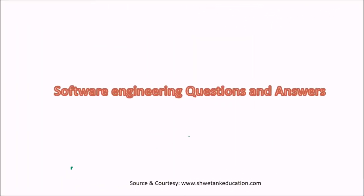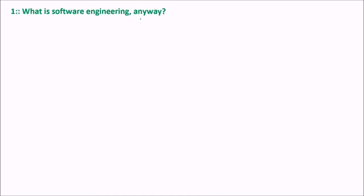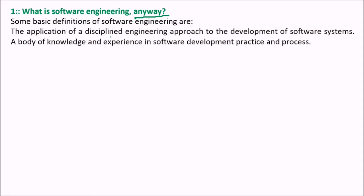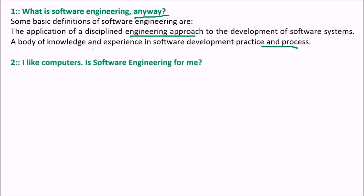Let us take some software engineering questions and answers. First is: what is software engineering? There are various definitions given by eminent personalities, including one from IEEE. A basic definition is the application of a disciplined engineering approach to the development of software systems — a body of knowledge and experience in software development practices and processes. In short, a disciplined and planned engineering approach to the development of software or a product is software engineering.